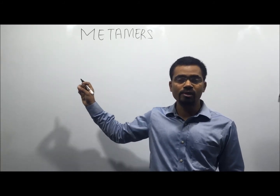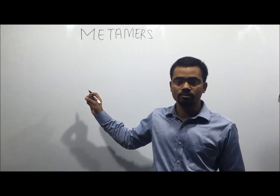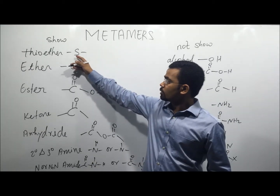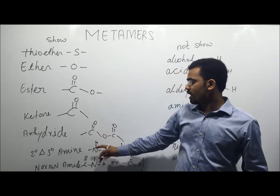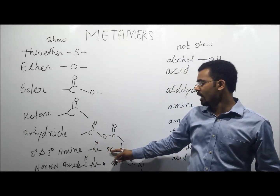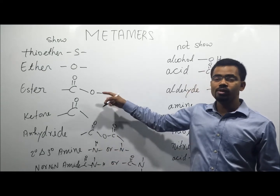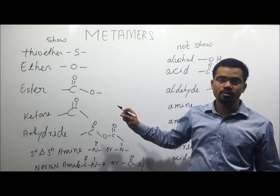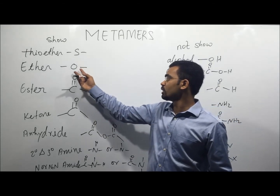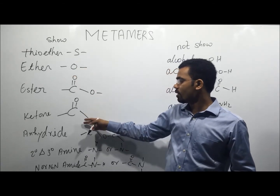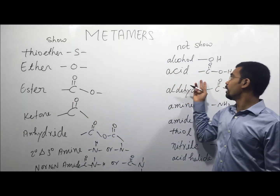Functional groups which will show Metamers include: thioether, ether, ester, ketone, anhydride, secondary and tertiary amide, and N or N-substituted amide. All of these will show Metamers because they are all polyvalent functional groups — they each have a valency of 2 or more.